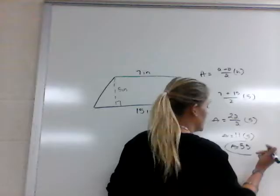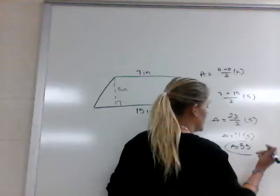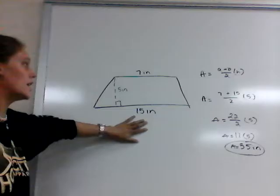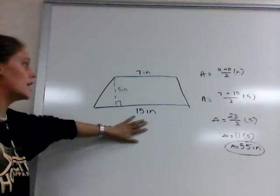So the area of our trapezoid is 55 square inches. We found that using the area of the trapezoid formula: (a plus b) divided by 2, multiplied by the height.